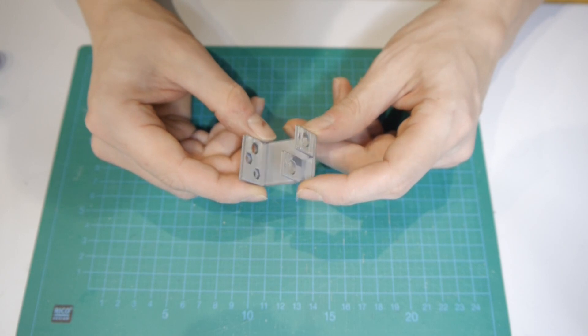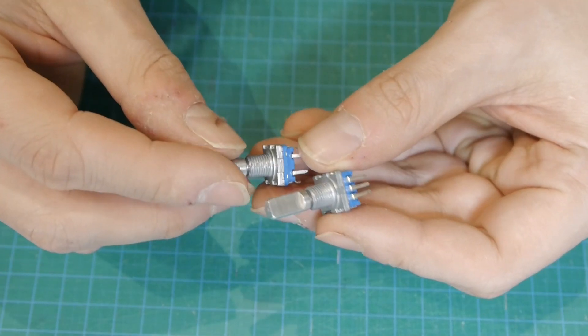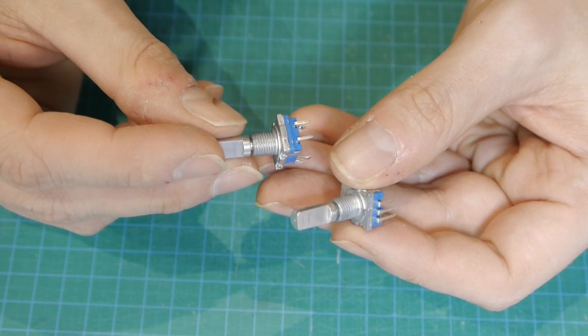First of all, you will need a 3D printed case and two rotary encoders. D-shaped shafts will make the connections more stable.